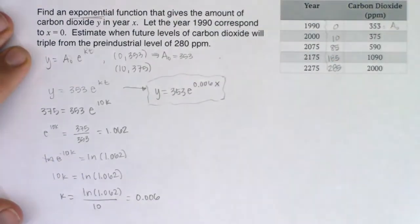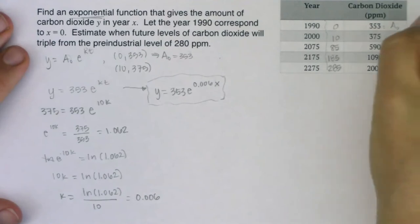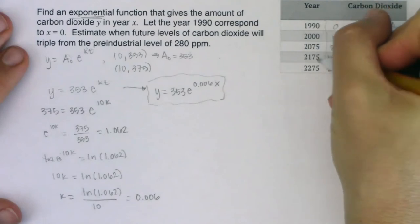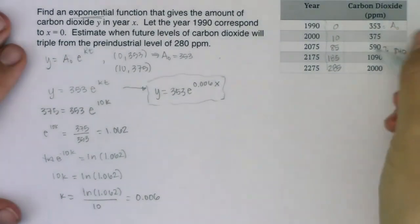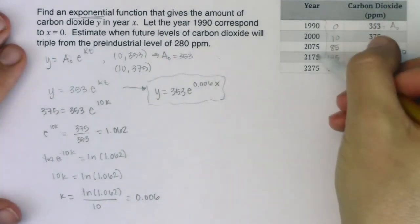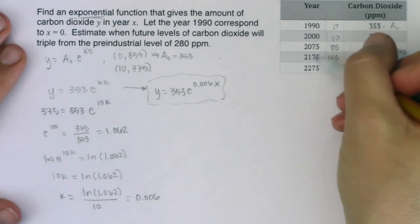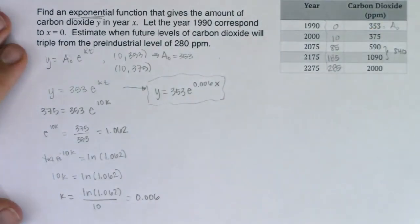If I want to triple that pre-industrial level, I'm asking when do we think carbon dioxide is going to hit around 840 parts per million? Let me get some gut feels here. I see 840 is trapped between 590 and 1090, but it's closer to 1090. So basically I think my answer is somewhere between 2075 and 2175, but closer to 2175. If I had to guess, I would say at least 2125, maybe like 2130, 2140, somewhere in there. But let's go find out.